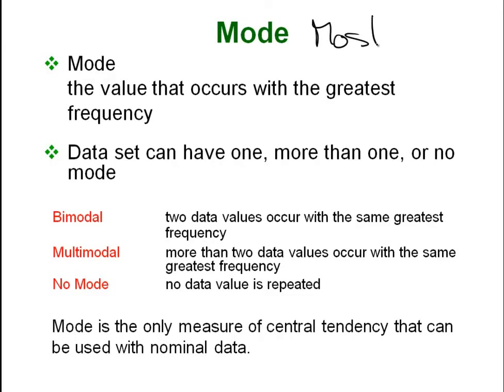The mode, which sounds very similar to most, is the most frequently occurring data value. Sometimes you will have a set of data with no mode whatsoever. Sometimes you will have two modes. Sometimes you will have multiple modes. Sometimes you will just have one mode. So you could have anywhere from zero to a bunch of modes. It just depends on your data set.